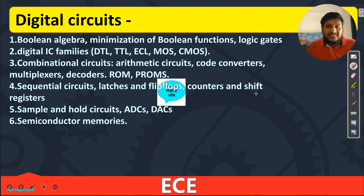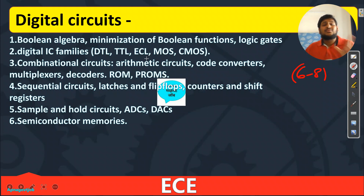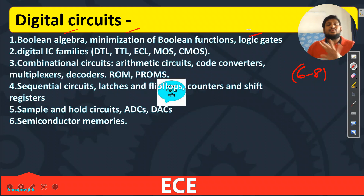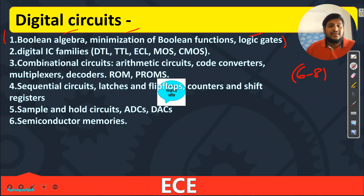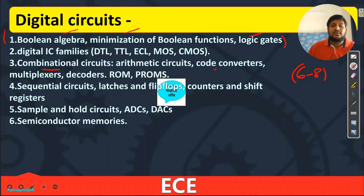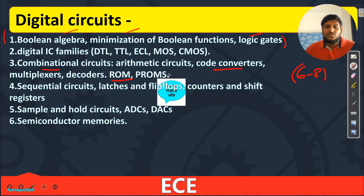Next subject is Digital Circuits, from which you can expect six to eight questions in your NILATE exam. Topics: Boolean Algebra, Minimization of Functions, and Logic Gates — compulsory. They will ask questions on realization. KMAP, SOP, POS — any of these can be asked. Compulsory question you will get from this, so do it properly. Then Combinational Circuits: multiplexers, demultiplexers, encoders, decoders, converters, ROM, PROM, EPROM — all basic things.